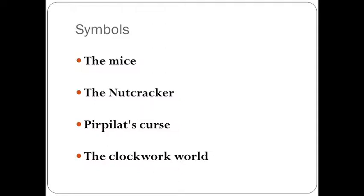The third symbol is Pirlipot's curse. In Mary's imagination, she invents a beautiful princess — more beautiful than any other person in any universe — making Pirlipot archetypal as the most beautiful girl in the world. She represents the fullness of Mary's desire to be beautiful. When Pirlipot is cursed with a hideous face, she comes to represent Mary's fear of being ugly.